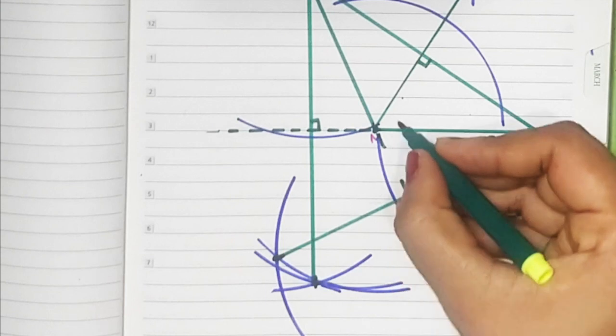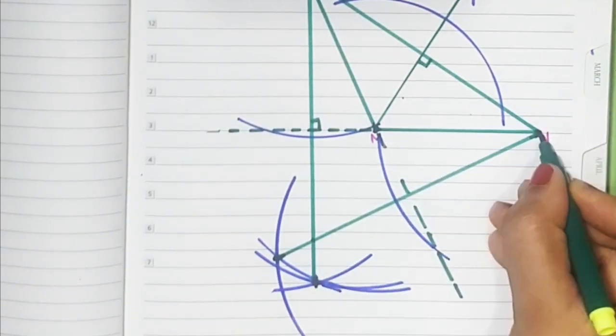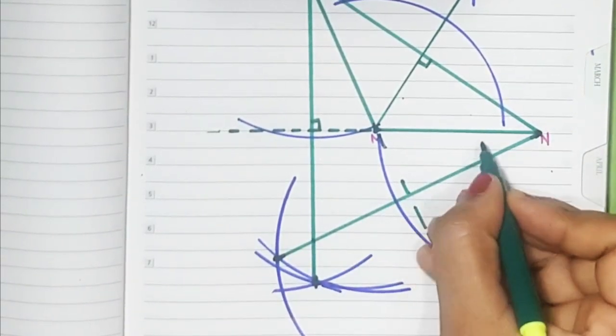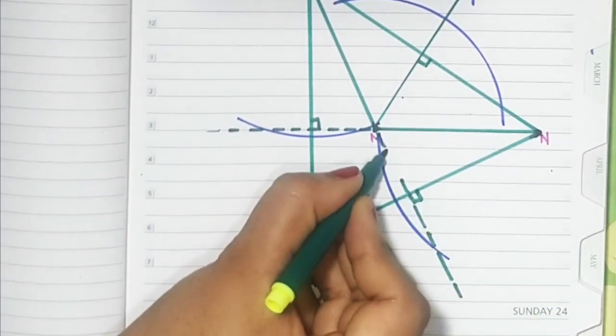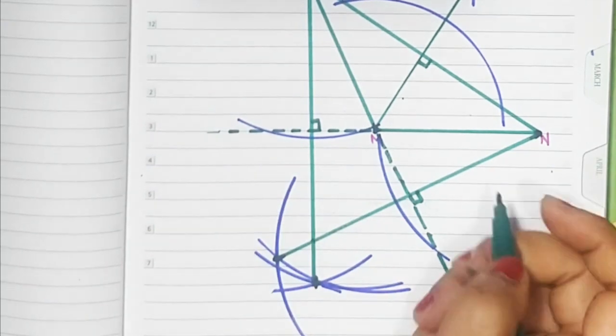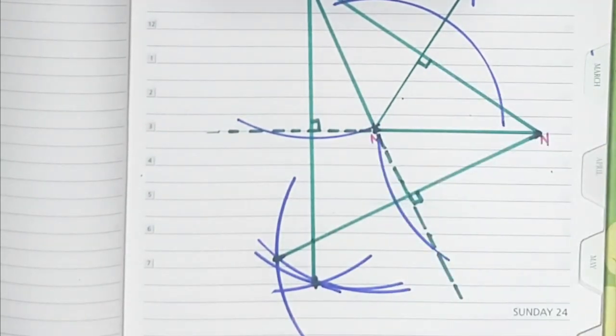Then we join this to here. Done. Now we have drawn the altitude. This one is here and this one is here. Mark 90, 90, 90—three altitudes are done.